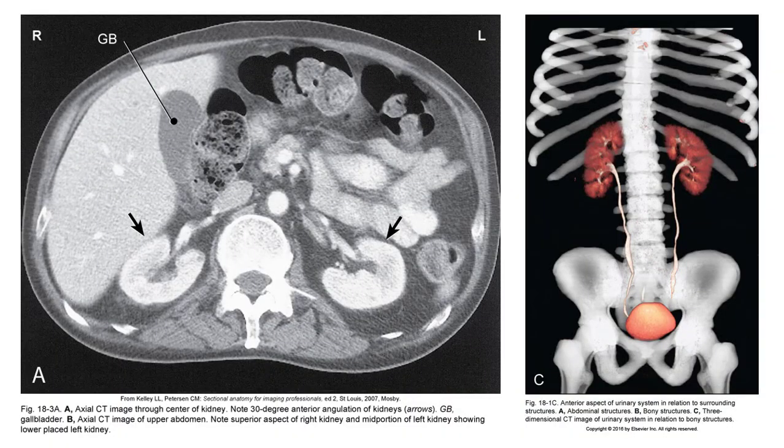Take a look at this CT slice, which shows the kidneys indicated by the black arrows, located retroperitoneal and in contact with the posterior abdominal wall. Their superior aspect is more posterior than inferior, and they lie in an oblique plane approximately 30 degrees anteriorly towards the aorta. They extend from approximately T12 to L3.